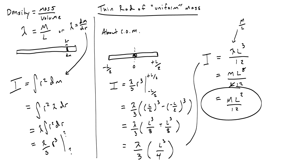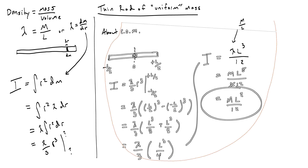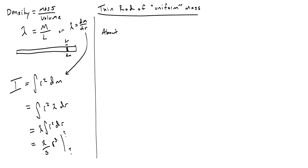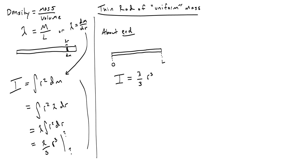The other way you'll be asked to derive the moment of inertia for a thin rod is not about its center of mass. Instead, you might have something like the hand of a clock where the rod rotates about one of its ends. In this case, the end of the rod is 0 and the opposite end is L. You do the same integration: lambda over 3 times R cubed, evaluated from 0 to L.